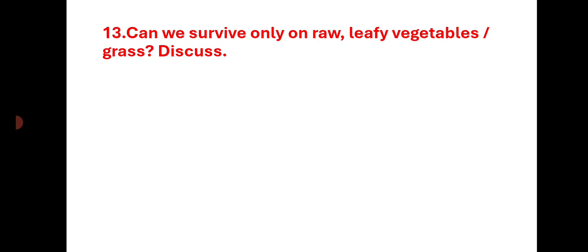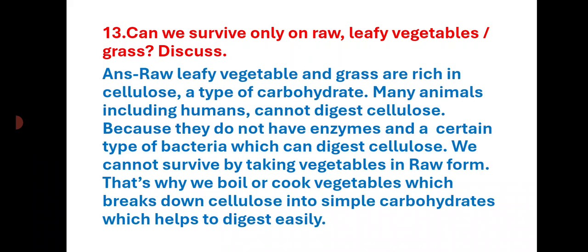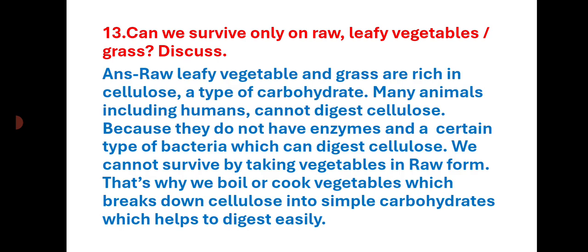Can we survive only on raw leafy vegetables or grass? Raw leafy vegetables and grass are rich in cellulose, a type of carbohydrate. Many animals, including humans, cannot digest cellulose because they do not have the enzymes and certain types of bacteria needed to digest it. That is why we boil and cook vegetables, which breaks down cellulose into simple carbohydrates that are easier to digest. Please subscribe to the channel and like the video.